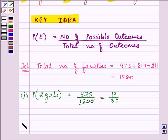Second point is to find out the probability of 1 girl, a family that is having 1 girl. So it is 814 divided by 1500, which equals 407 divided by 750 on simplifying.